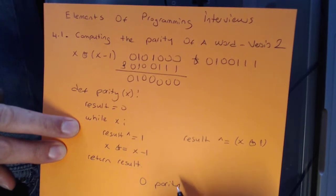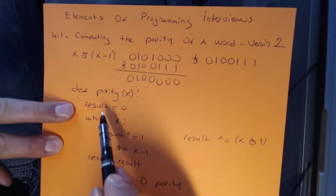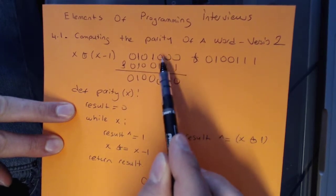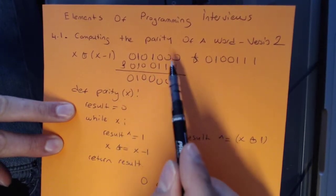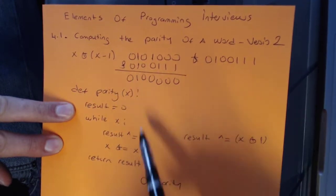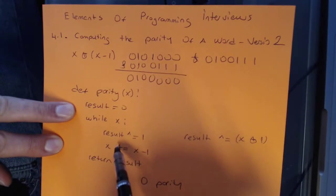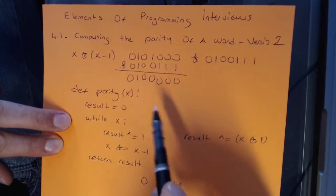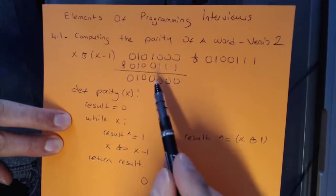So I want to make sure this makes sense to everybody. Compared to the first solution that we had which went through every single bit, this particular solution will only go through set bits, and it's going to unset it every single time it passes through and XOR the result with 1 and then we return the result at the end.